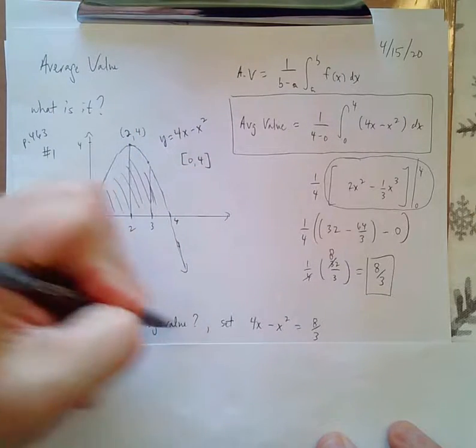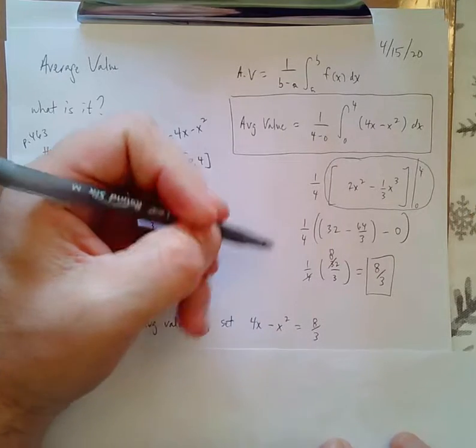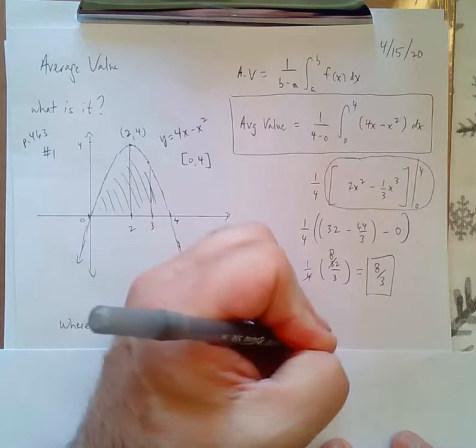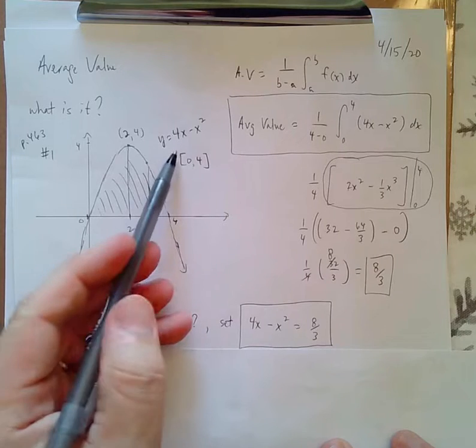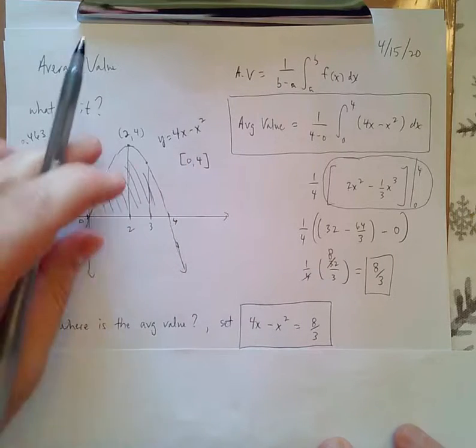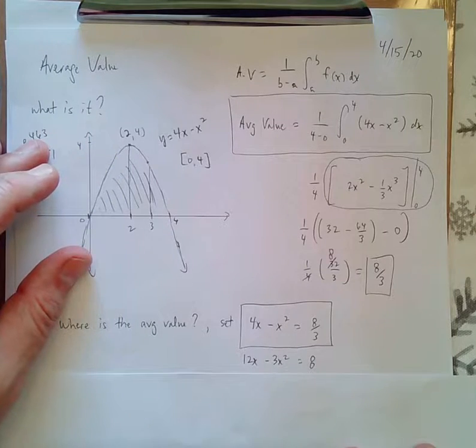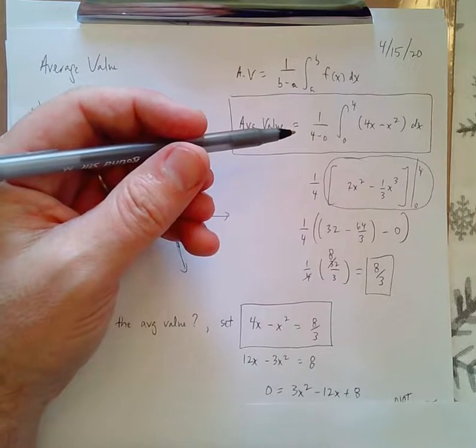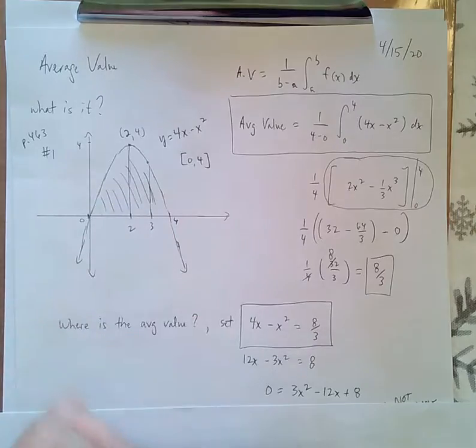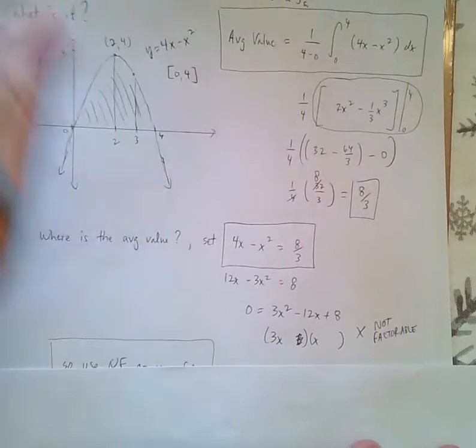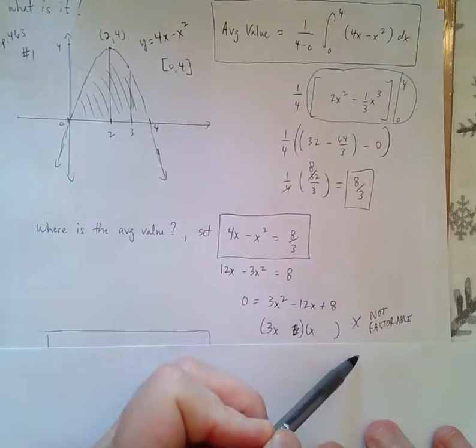Where is the average value? They might ask that in the homework. And all you got to do is you got to set the equation equal to 8 thirds. So I take the original equation and I set it equal to 8 thirds. I multiplied both sides by 3 to get rid of the fraction. I brought it all over to one side. And I got this quadratic. I realized it was not factorable.